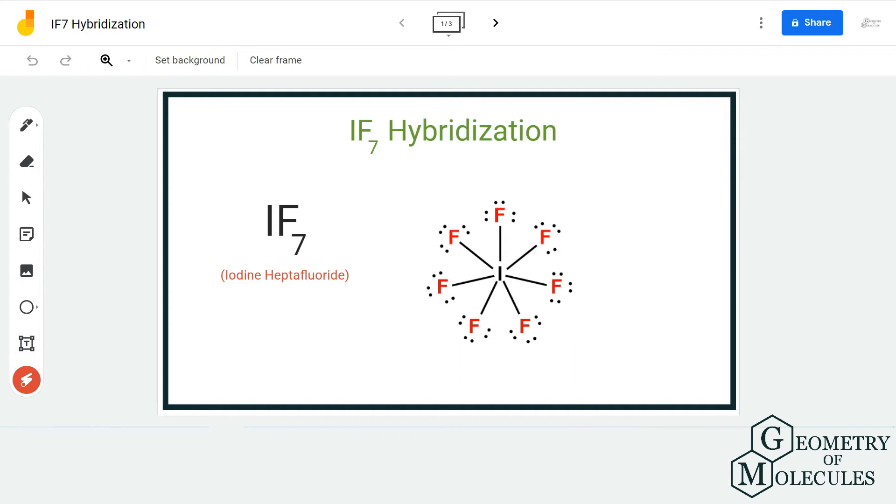Hi guys, welcome back to our channel. In today's video, we are going to help you determine the hybridization of IF7 molecule, the chemical formula for iodine heptafluoride. While there are many ways to find out the hybridization and geometry of molecules, we use the easiest way to find the hybridization of any given molecule.